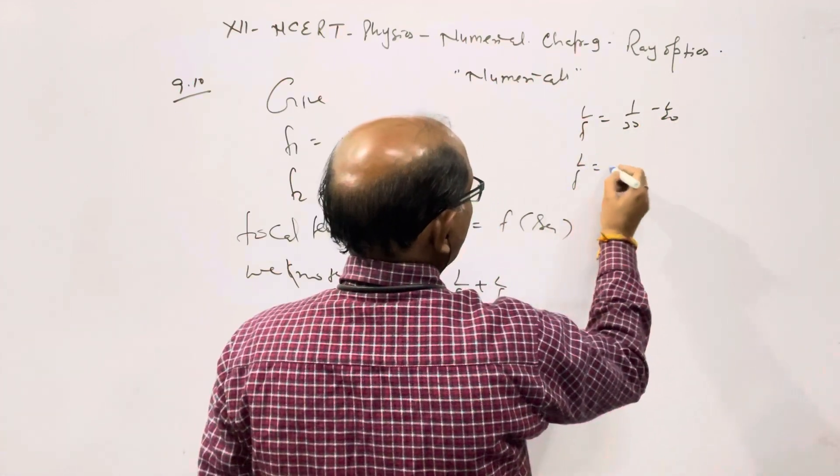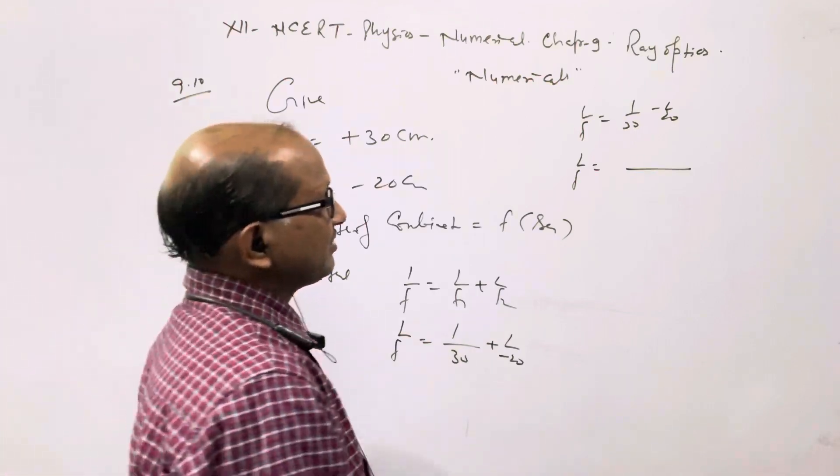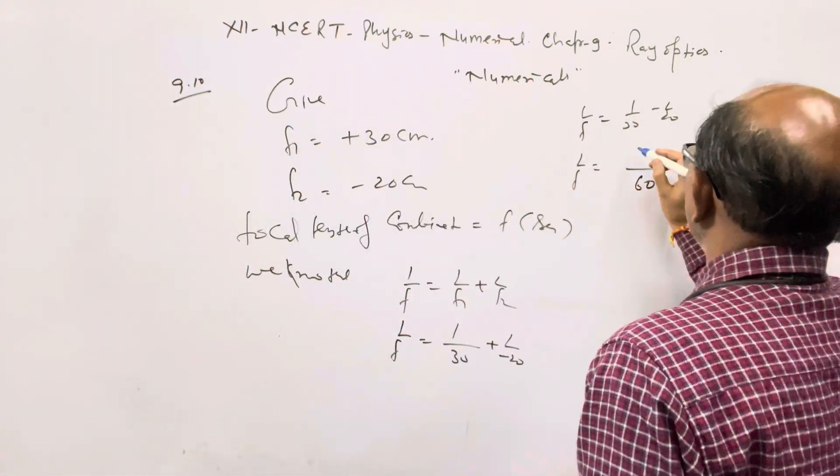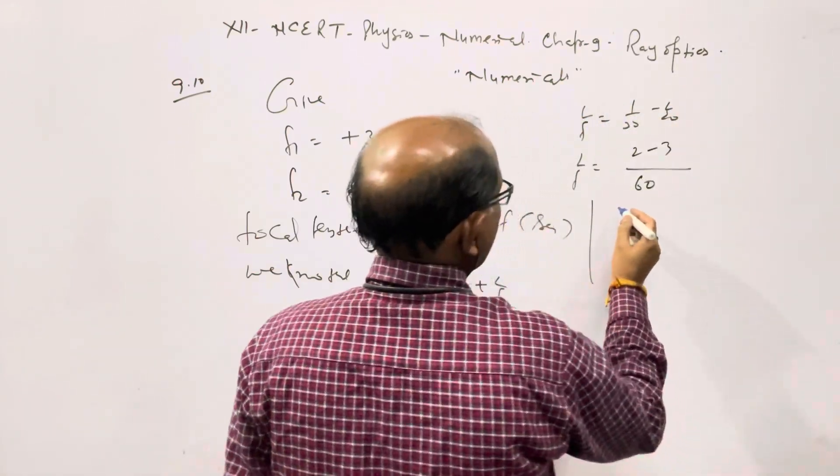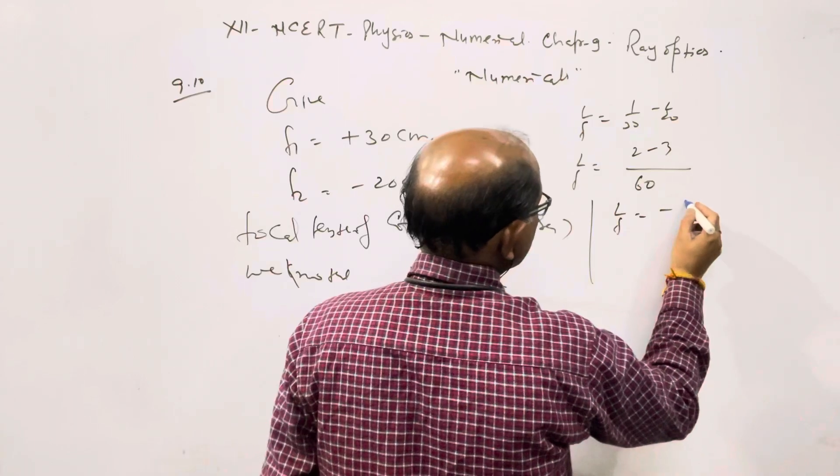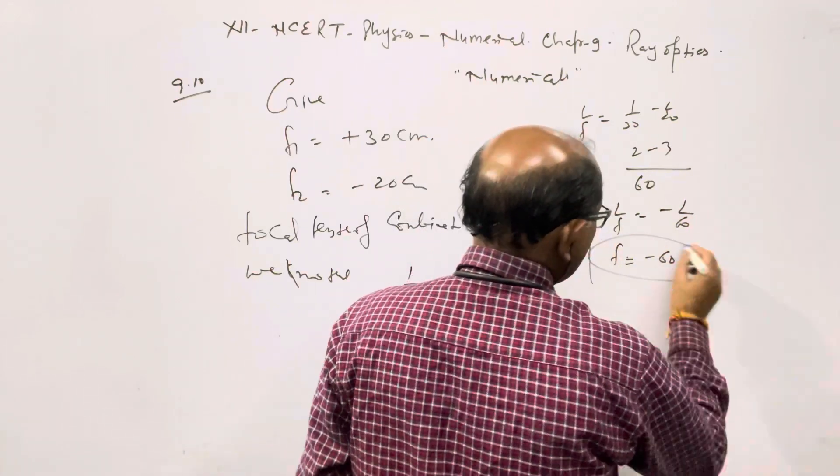Taking the LCM of 30 and 20 as 60, and multiplying: 1/f = (2 - 3)/60 = -1/60. Therefore, f = -60 cm.